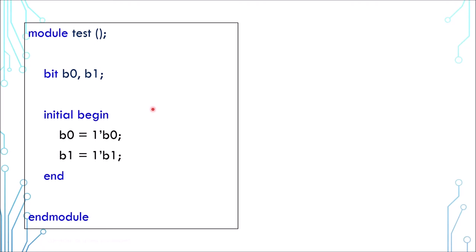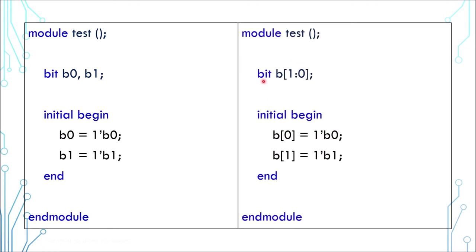The same code can be written with one array variable instead of two different bits. In this case, the array is two bits wide, then each individual bit can be accessed using square bracket.